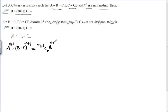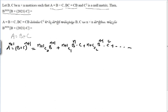The expansion continues: + (n+1)C₂ · B^(n-1) · C² + ... and so on. Since C² is the null matrix, C², C³, C⁴, and all higher powers of C are also null matrices, so all terms from the third term onward are zero.